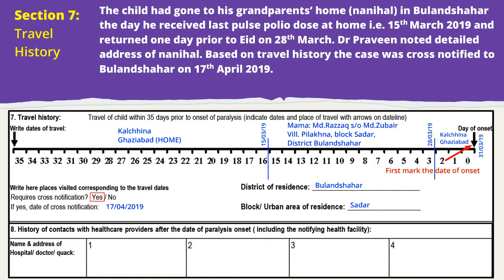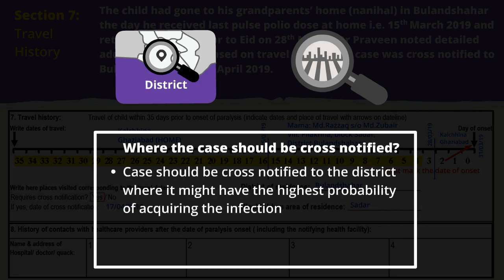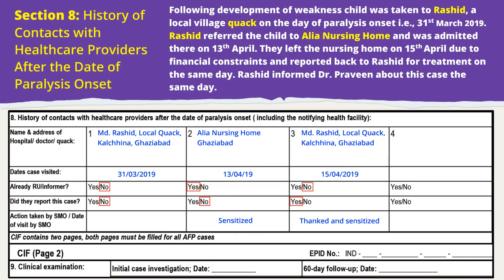On average, the incubation period for polio is 7–10 days and ranges from 4–35 days. The case would have acquired the infection from one of the places where he or she had stayed during the incubation period. Based on travel history, the case should be cross-notified to the district where he or she had the highest probability of acquiring the infection. Detailed epidemiological field investigation must be done in the cross-notified district. Record names, addresses, and dates of visit for all health facilities visited after paralysis onset.